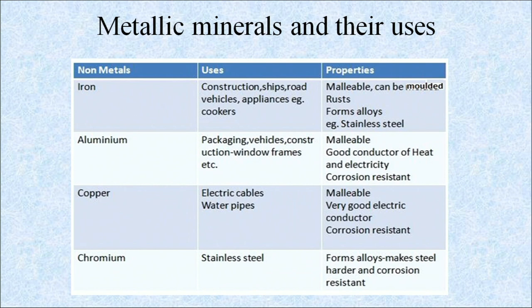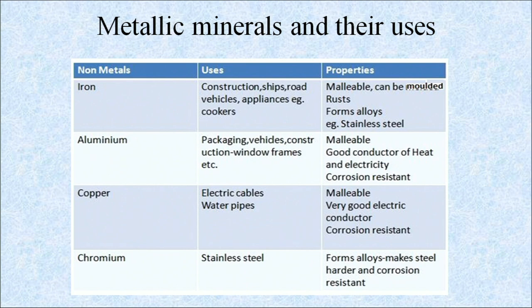This table shows metallic minerals and their uses. Iron is malleable, can be molded, forms alloys and is used for construction, ships, roads, vehicles, etc. Aluminium is used for packaging, vehicles, construction, window frames, and has properties like malleability, good conductor of heat and electricity, and corrosion resistance. Copper is used for electric cables, water pipes, and is malleable and a very good electric conductor. Chromium is used for making stainless steel and forms alloys that make steel harder and corrosion resistant.